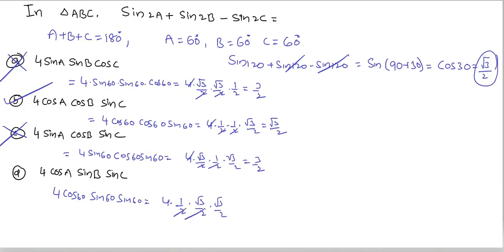For this question, the second option is the correct answer. So in triangle ABC, sin2A + sin2B - sin2C is equal to 4cosA cosB sinC.